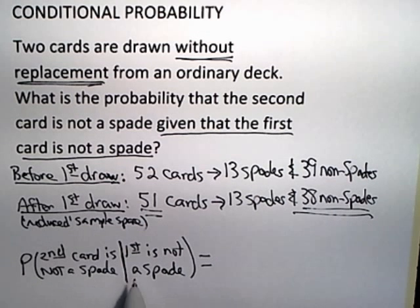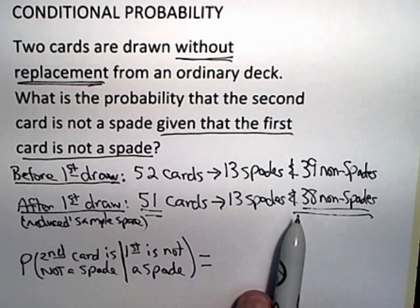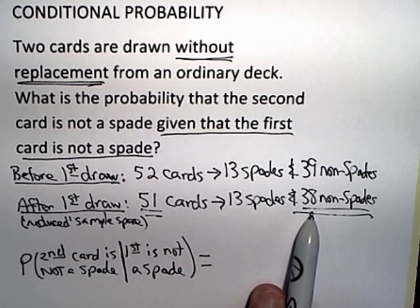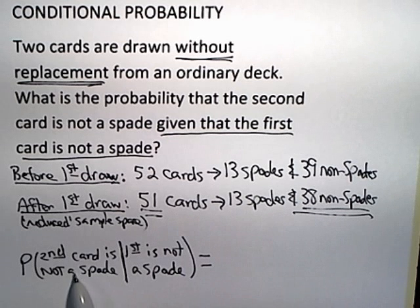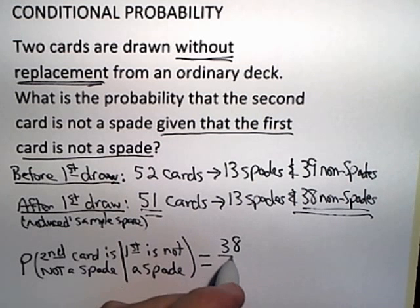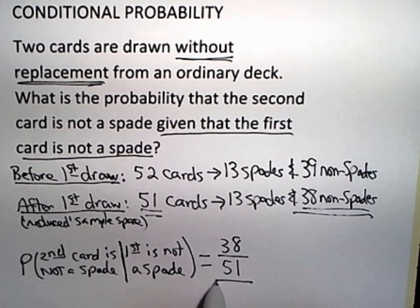So the probability that the second card is not a spade, given that the first is not a spade, is calculated from the reduced sample space as being the number of things you want, which are not spades, that would be 38, over the total number of cards left in the deck, which would be 51. Now had that fraction reduced, we would want to reduce it, but 38/51 does not reduce.